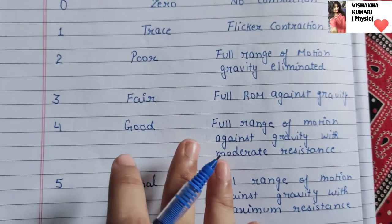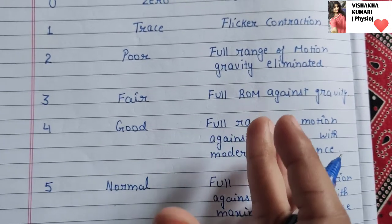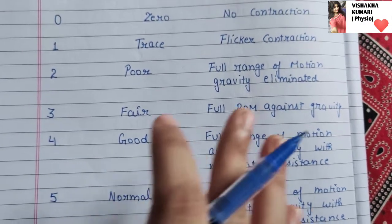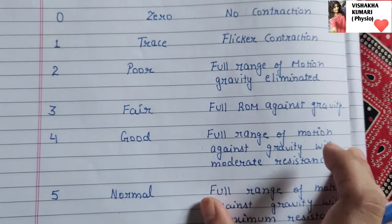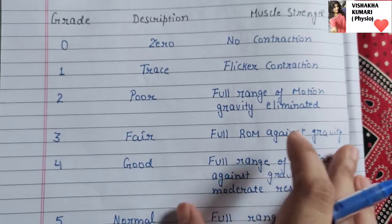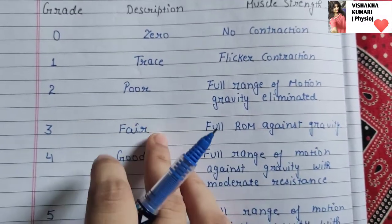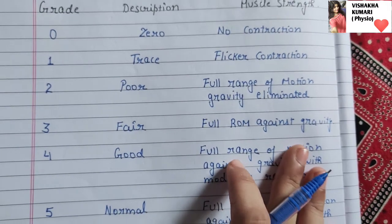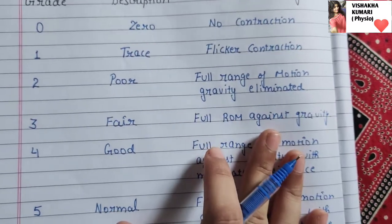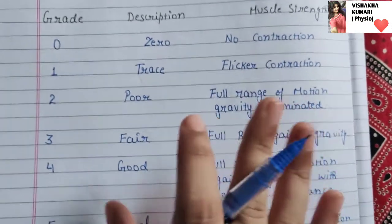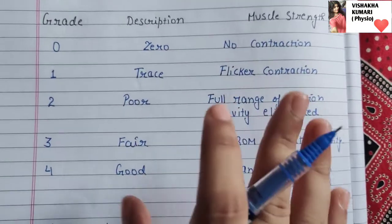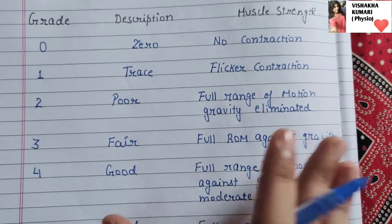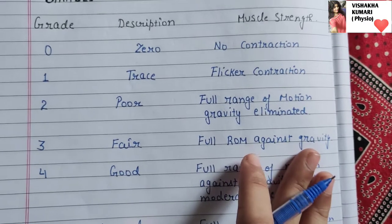There are many cases, such as neurological or musculoskeletal disorders, in which muscle movement is impaired. In those cases, you have to perform all the tests and then assign grades based on your findings. From an exam perspective, you must remember the grades and their descriptions — this is a very important topic in exercise therapy.